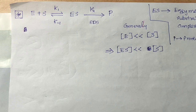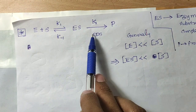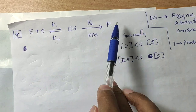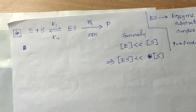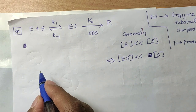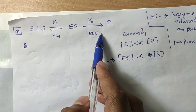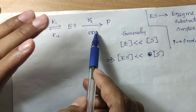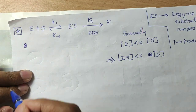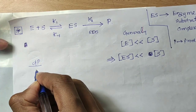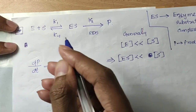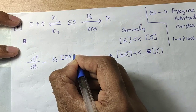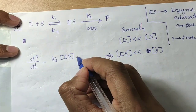Now let us write the derivation. The second step is the rate-determining step (RDS). The rate of a reaction depends solely on the RDS. So, dP/dt is equal to K2 times [ES]. This is our first equation. Our next aim is to find an expression for [ES], and that is done by steady-state approximation.